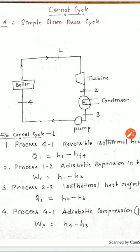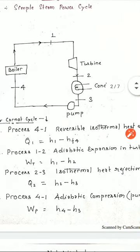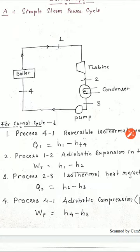Now, let's see the process in different components. Process 4 to 1. Process 4 to 1 is reversible isothermal heat addition. In this process, heat is added isothermally. One minute, we are studying about the Carnot cycle, which is the operating cycle for the simple steam power cycle. And after few minutes, we will discuss about the Rankine cycle working on the simple steam power cycle.